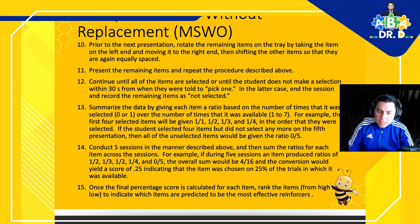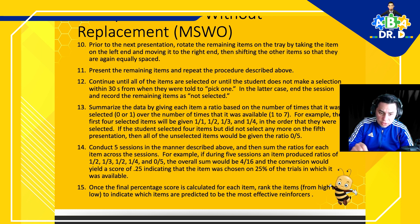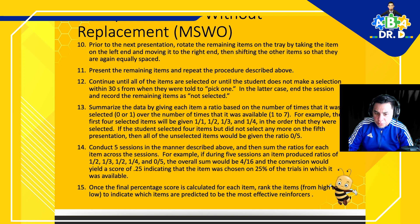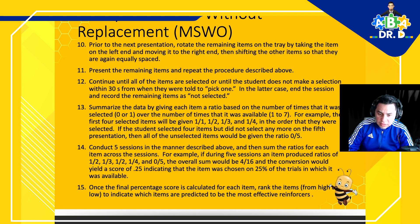If the student doesn't select within 30 seconds, end the session and record the remaining items as not selected. Summarize the data by giving each item a ratio based on the number of times it was selected over the number of times it was available — for example, 1/1, 1/2, 1/3, 1/4. The first four selected items receive those ratios in the order they were selected. If the student selected four items but did not select any more on the fifth presentation, all remaining items receive a ratio of 0/5.